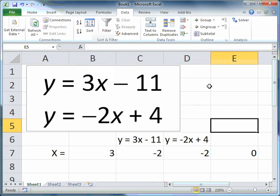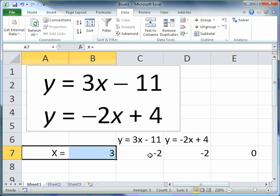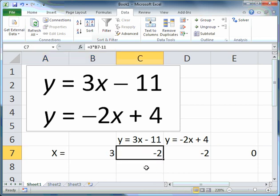I'll click on OK again. So the correct values produced by goal seek are x equals 3 and y equals minus 2. These are the correct values produced by goal seek. I'll click on OK.